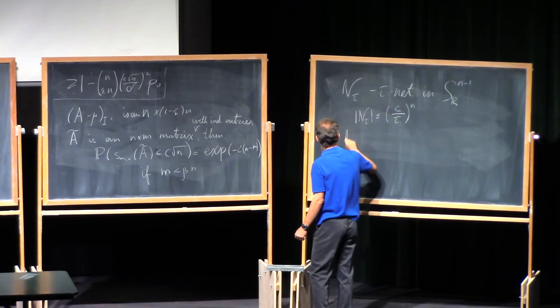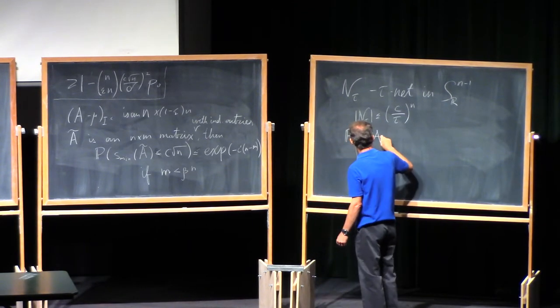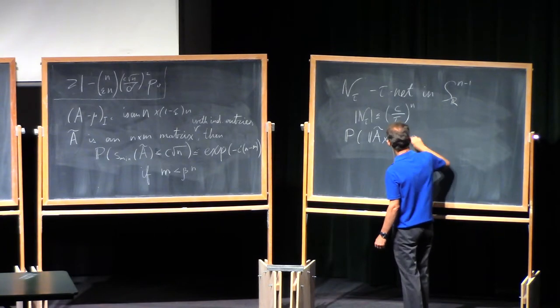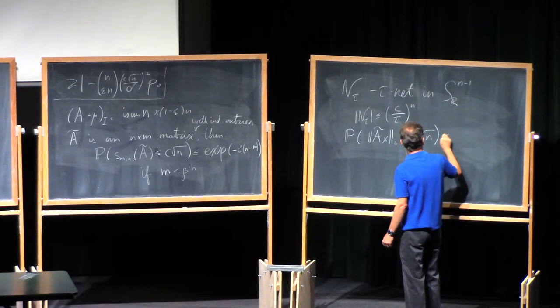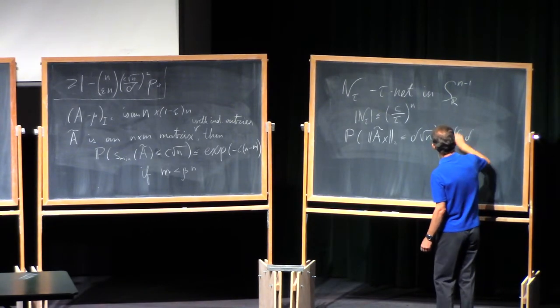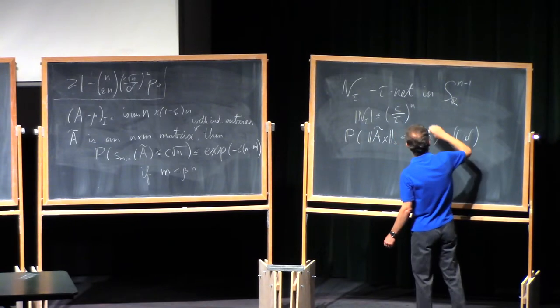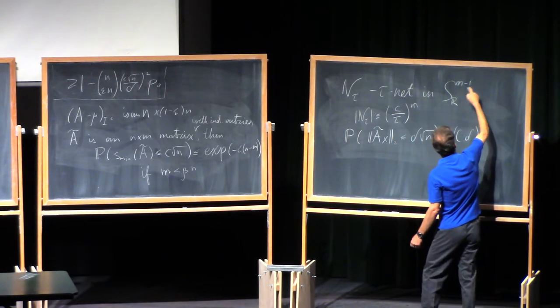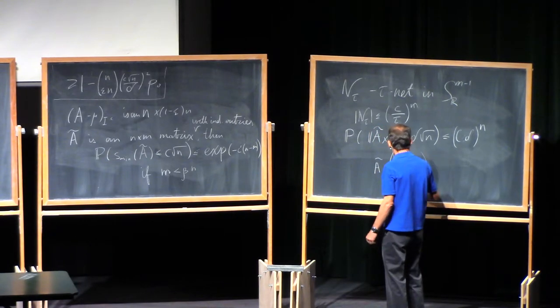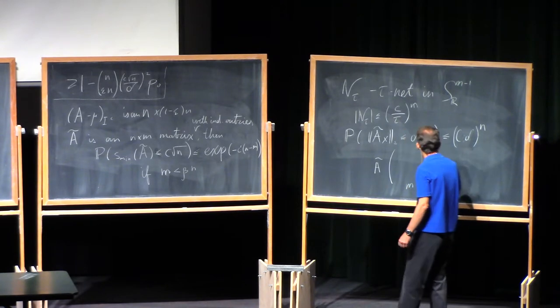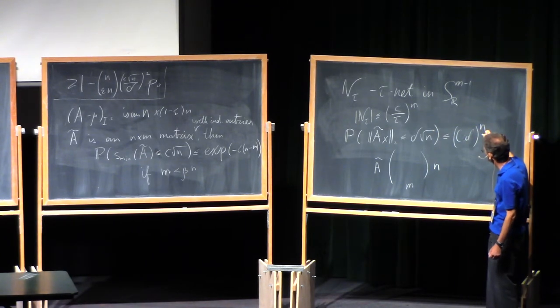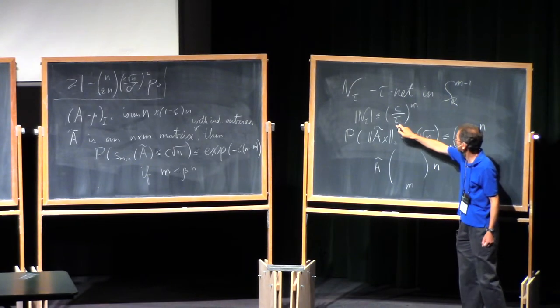And if we are lucky, the probability that the norm of A tilde x in L2 is less or equal than, say, c delta square root n, is bounded by some constant c delta to the power m, if it's in the m-dimensional sphere, this will be n. So A tilde is the matrix which has n rows and m columns. And then we multiply these two numbers, and if n is greater than m, and delta is of the same order as tau, we win.